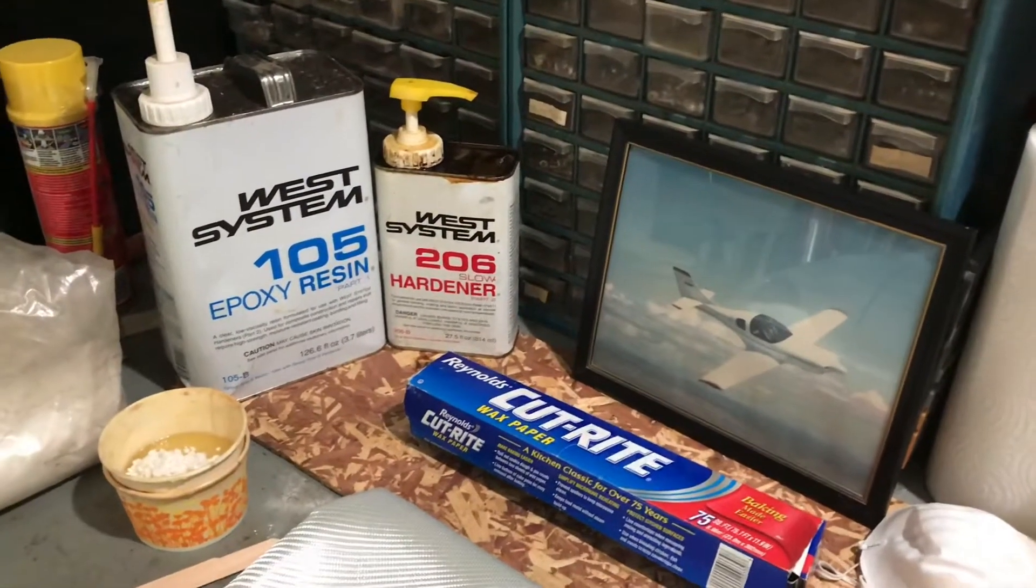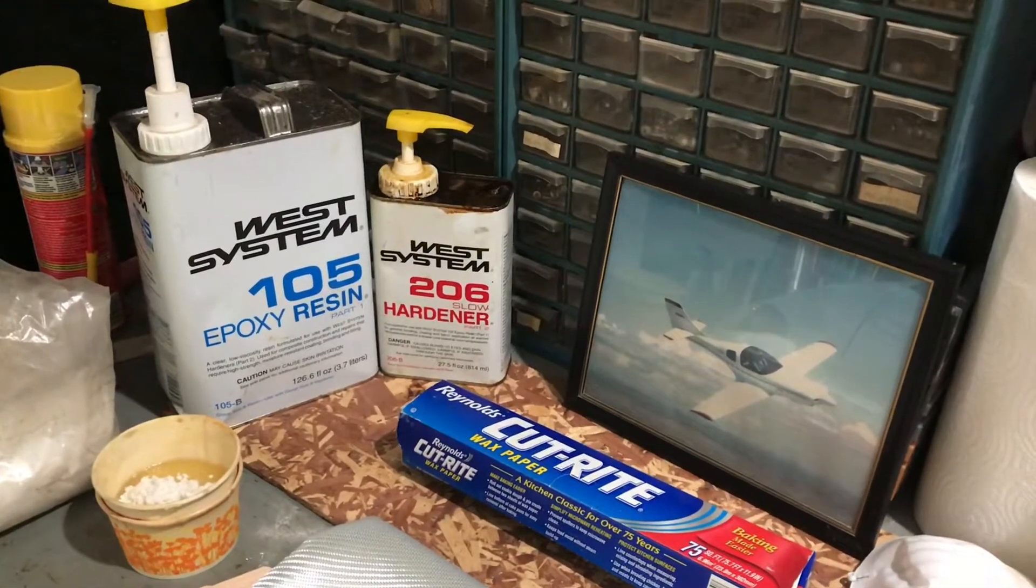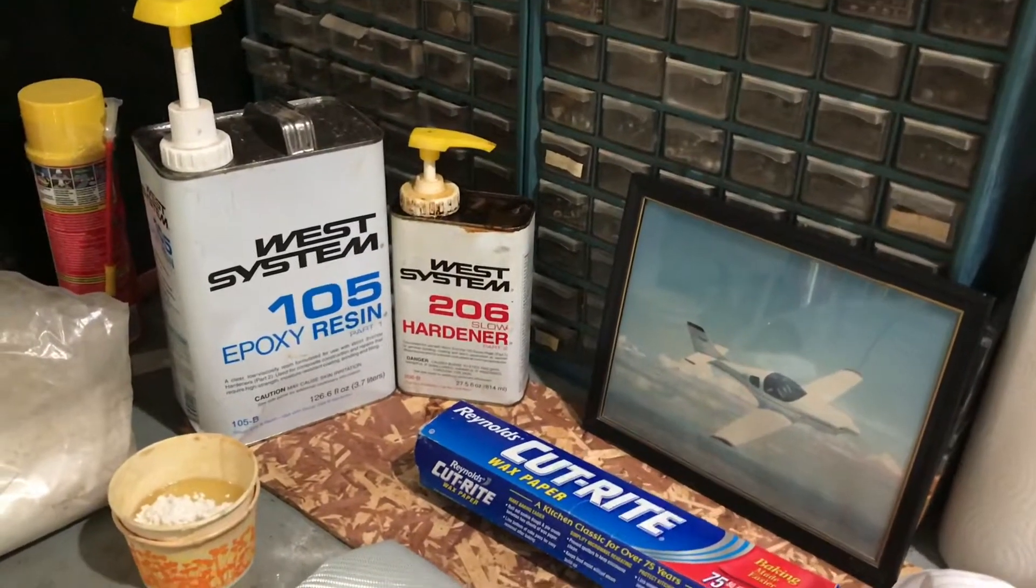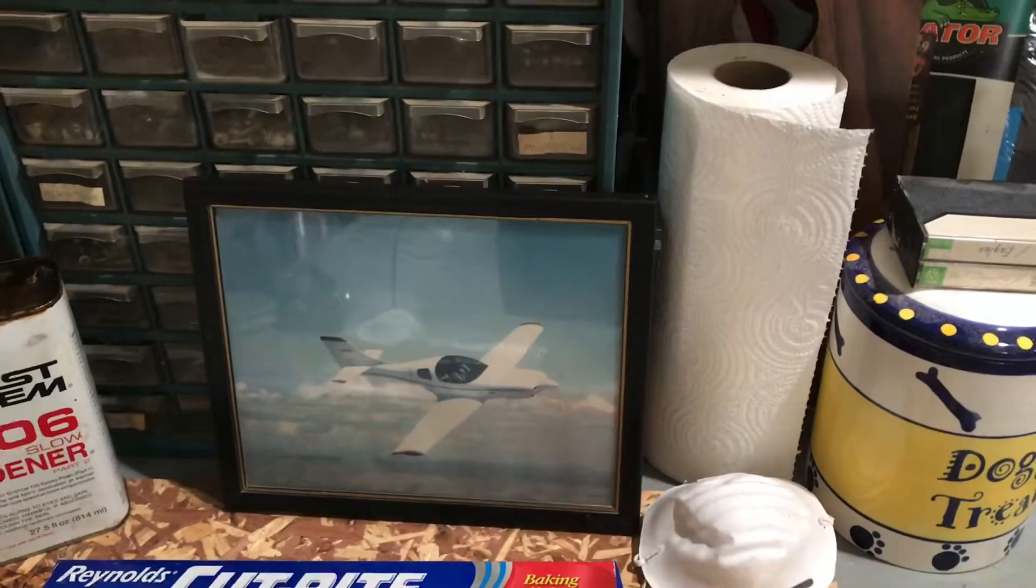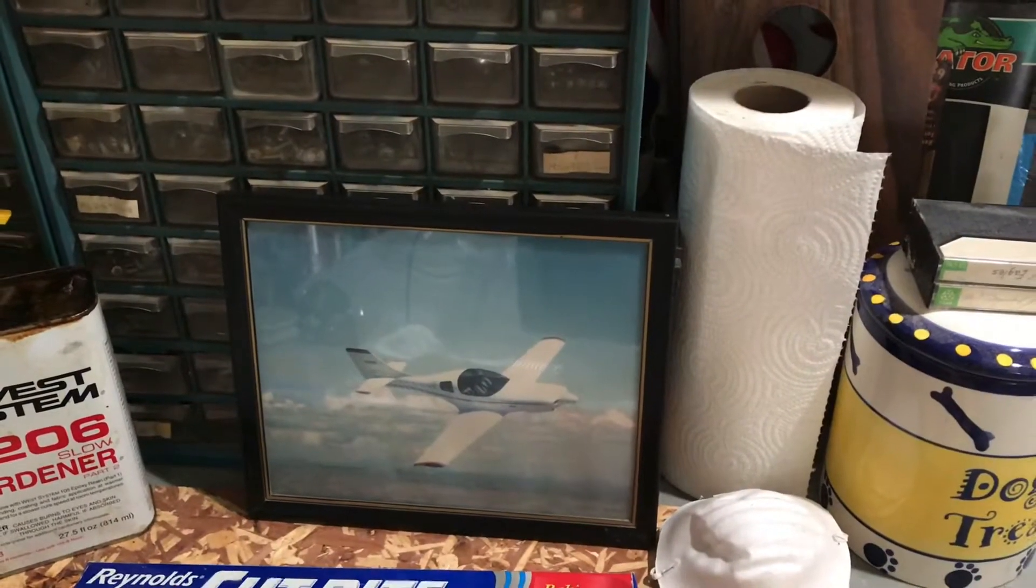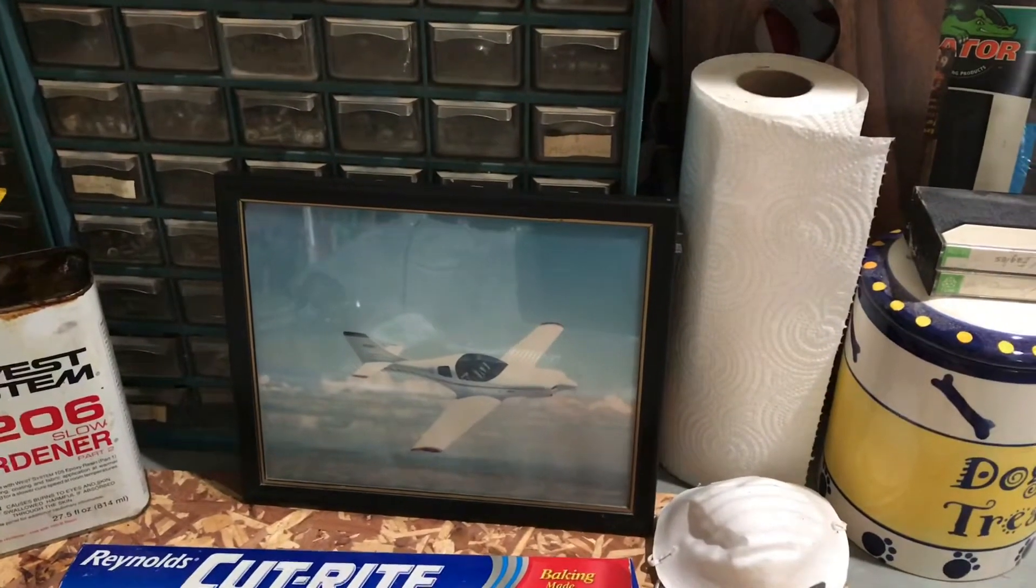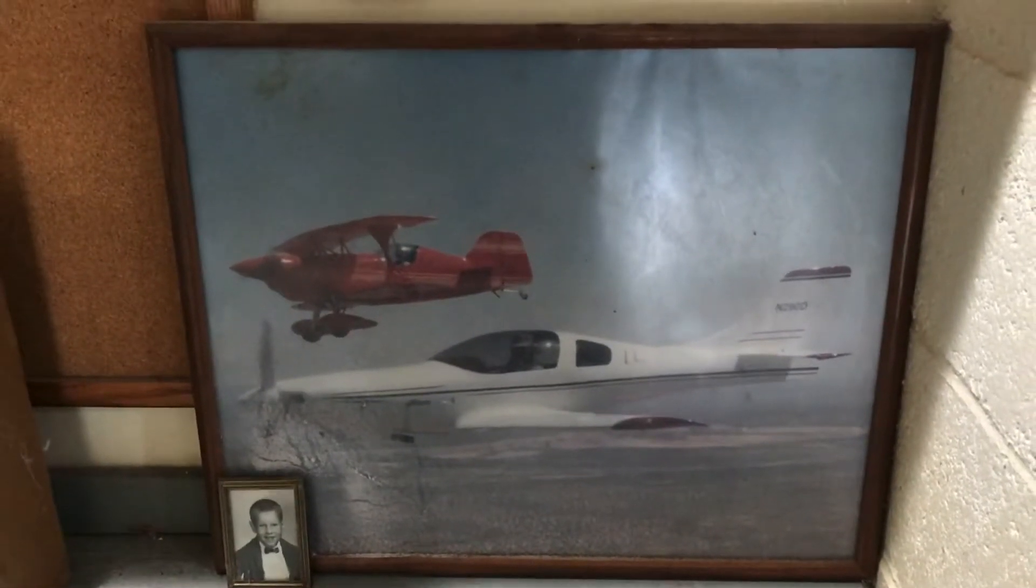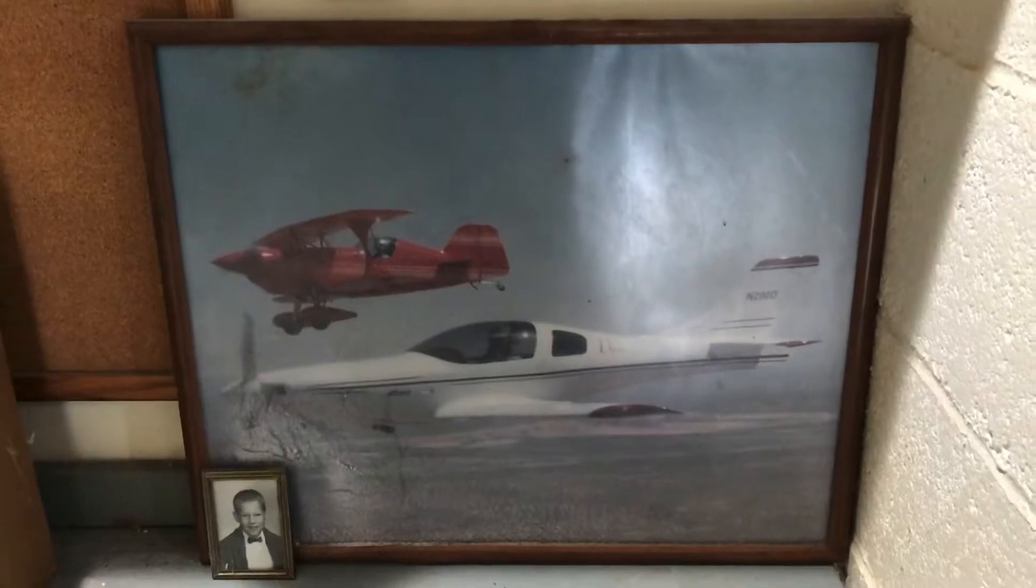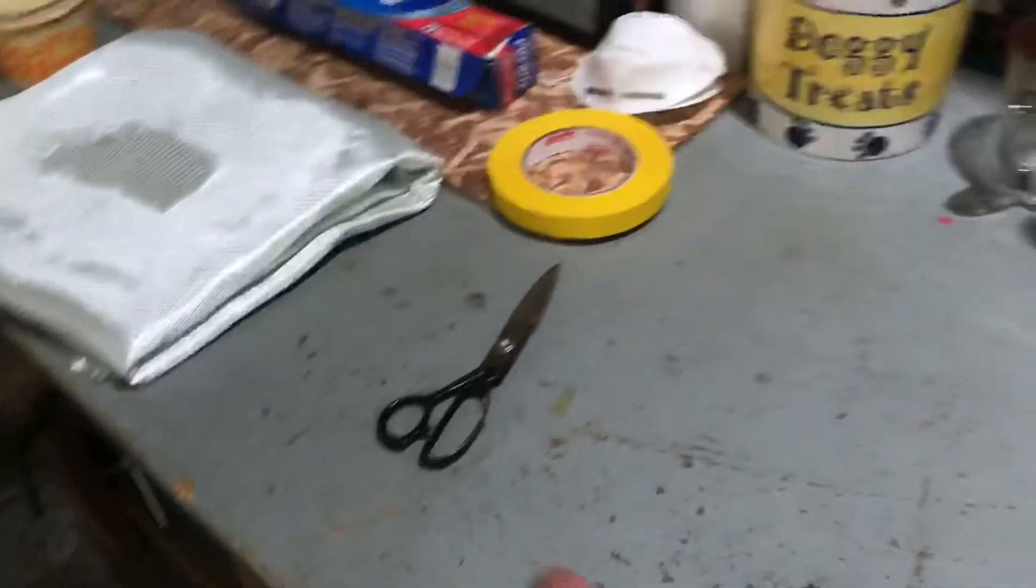You can get various hardening resins depending on how much time you want. I happen to like the 206, it gives me 35 to 45 minutes of working time. That's a picture of the fiberglass plane I built some years back. I was out over El Paso that day and we were doing some aerial photography. That's another shot doing some formation flying with an aerobatic plane. Had an awful lot of fun that day. Okay, we're also going to need scissors and that pretty much covers it.